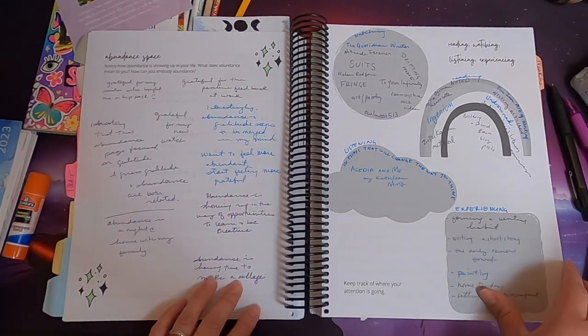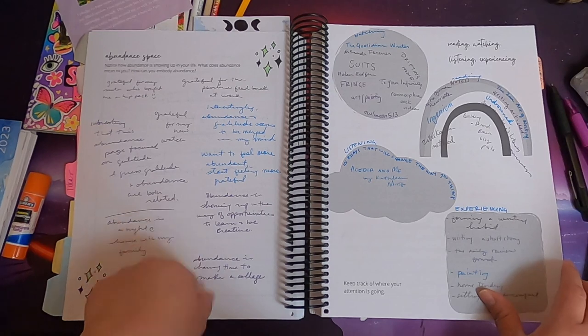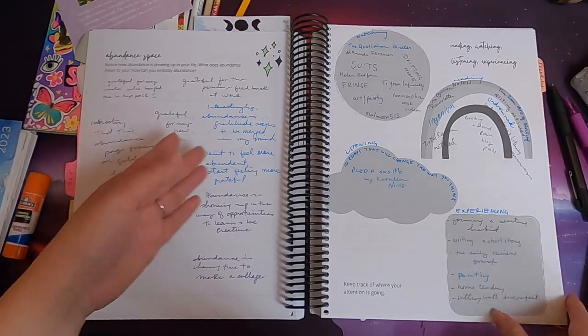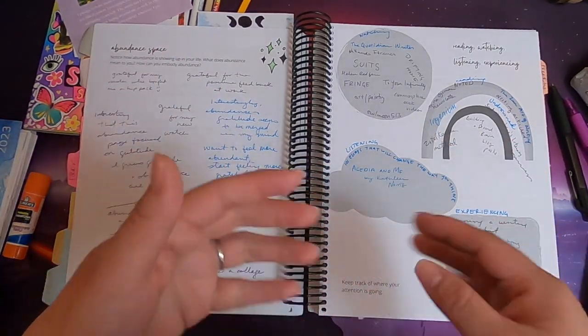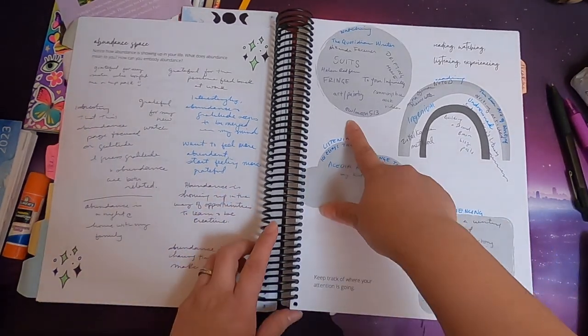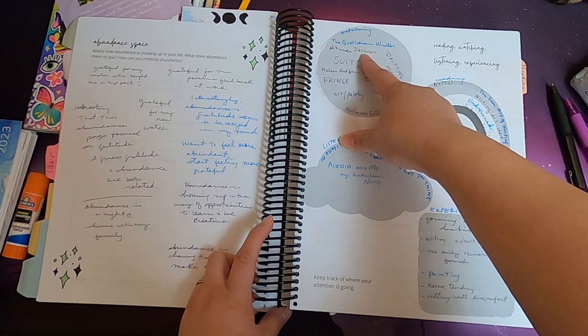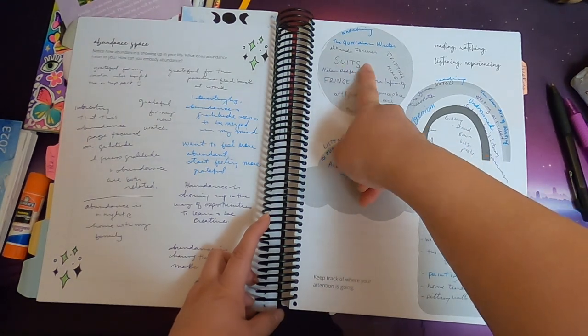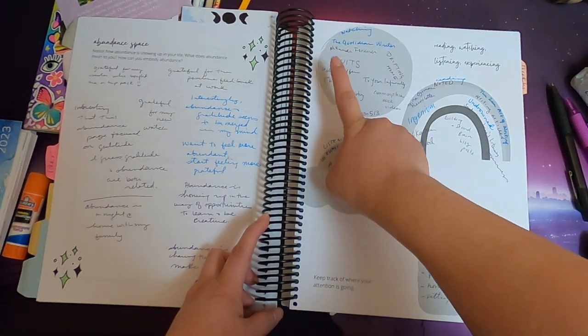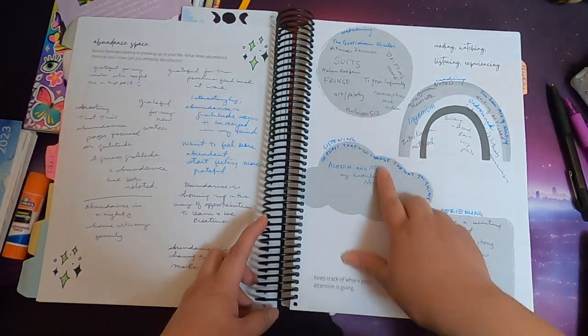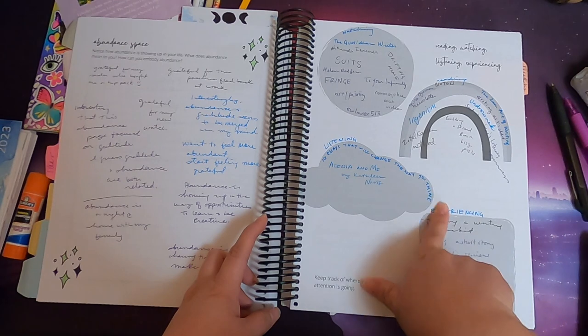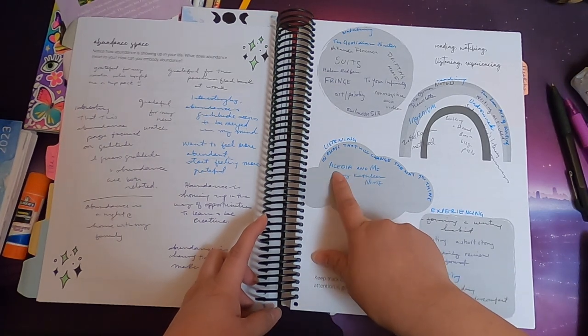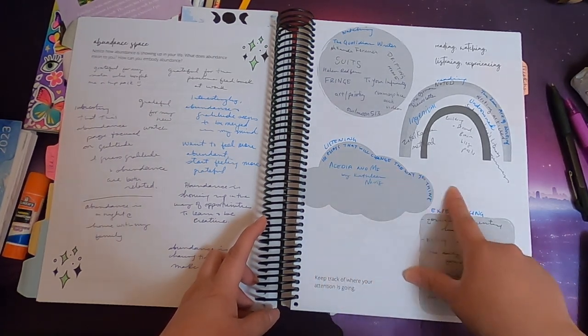I still did the abundance space. This is where it started to get confusing with the gratitude space because when I came to the page I would say I'm grateful for this, I'm grateful for that, so then I realized that they were very in my mind they're very connected. I wrote things about the different videos that I was watching. I watched a lot of the quotidian writer YouTube videos, we finished watching Suits, I really like that show actually I was surprised. Started watching Fringe for the second time. I got halfway through an audiobook that I hope to buy.